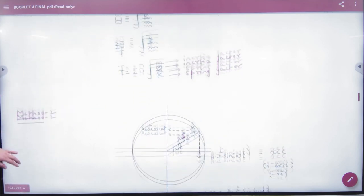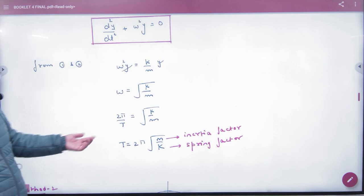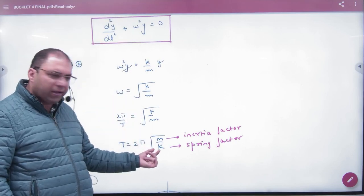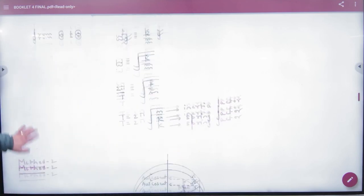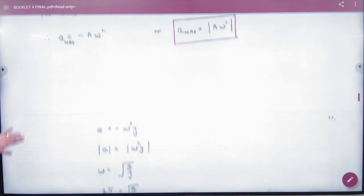I have told you this term. In the spring-mass system, ω = √(k/m), where m is the inertial factor and k is the spring constant.